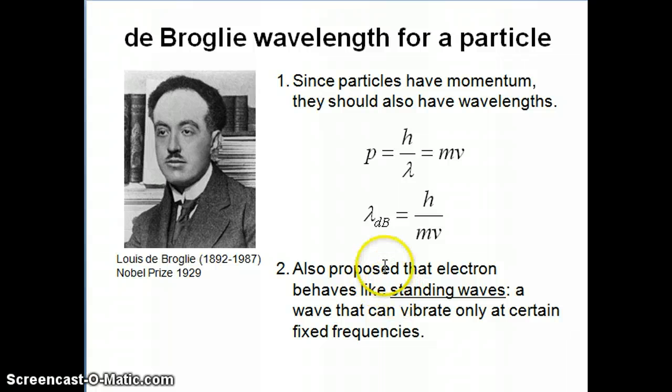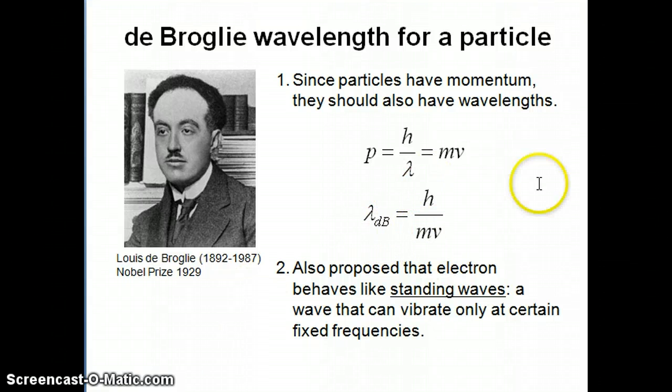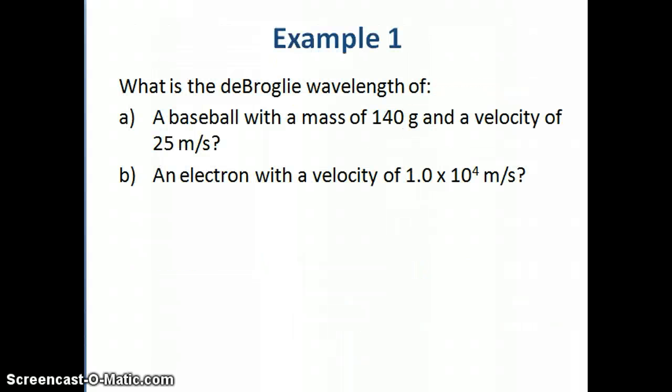He basically says that if I have a ball, for example, then I can calculate its wavelength because it's going to have a certain mass and velocity. Once you have this equation, you can then go out and calculate the wavelength of any particle that we see around us. We see a lot of particles around us: a ball, a marble, a car, ourselves. All of us are particles, in effect. We have some mass, we're moving at some velocity. So let's do this calculation with a couple of different particles here. One is a baseball that has a certain mass and velocity, and another one is an electron with a certain mass and velocity.